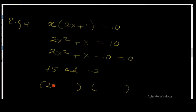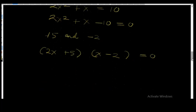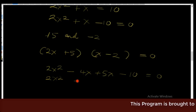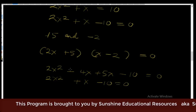Let's create the bracket: (2x + 5)(x - 2), all equal to zero. Let's multiply it out: 2x times x gives 2x²; 2x times -2 gives -4x; 5 times x gives +5x; and 5 times -2 gives -10. So we have 2x² - 4x + 5x - 10, which gives 2x² + x - 10 = 0. So the factors are correct.